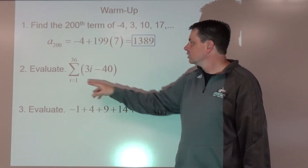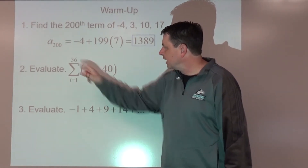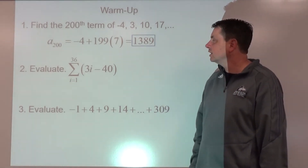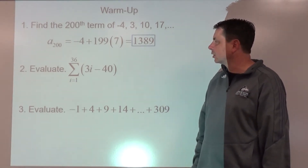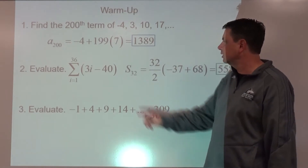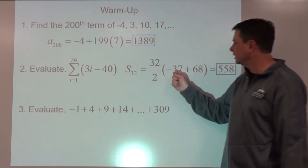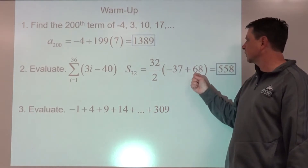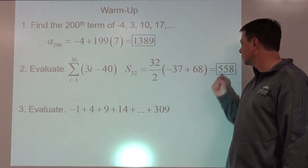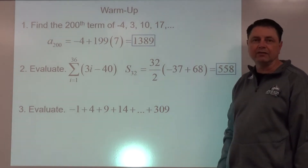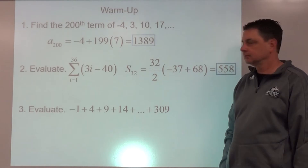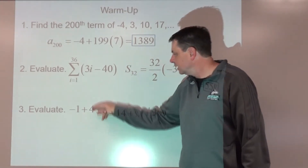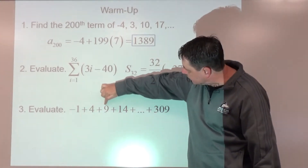If we start our count at 1 and stop at 36, we're adding up 36 terms. So s-sub-36 equals — we substitute in a-sub-1 to get the first term, substitute in 36 to get the last term, and the sum turns out to be 558.